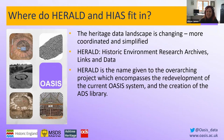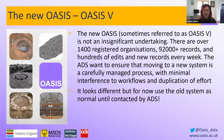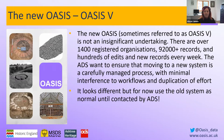The new Oasis is aimed at the whole sector, including academic and community researchers as well as museum organisations for the first time. Sometimes referred to as Oasis 5, it is not an insignificant undertaking — there are over 1,400 registered organisations and in excess of 92,000 records, as well as hundreds of edits and new records created each week. The ADS want to ensure that moving to the new system is a carefully managed process with minimal interference to workflows. If you've been to the landing page this week, you may have spotted it all looks a little different — there are links to the old system and the brand new one.